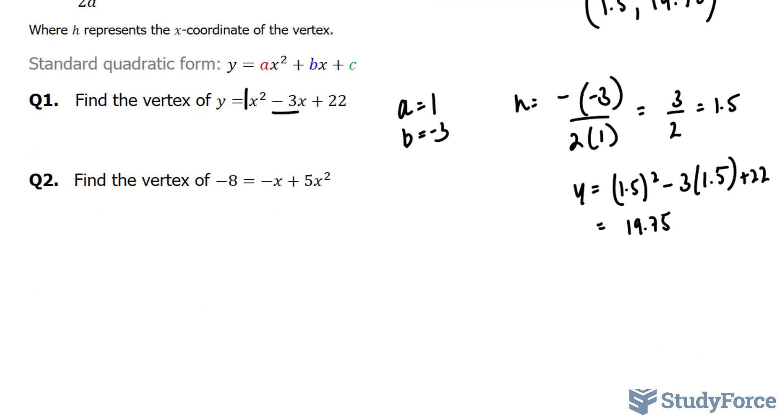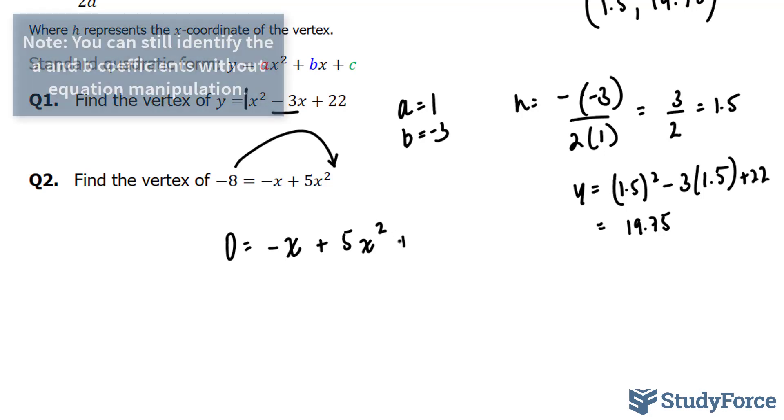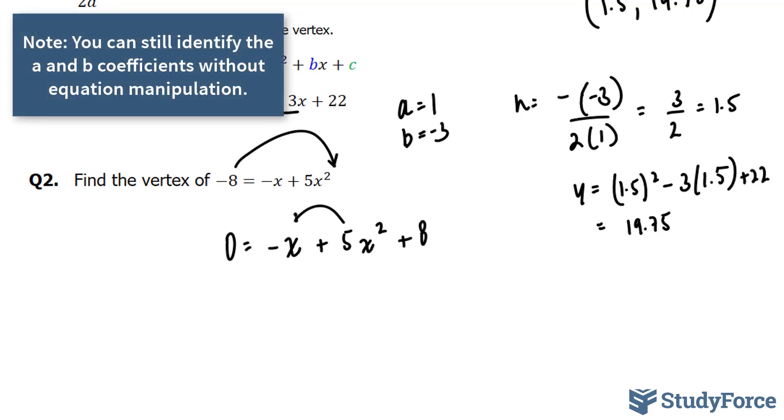Now that we know our technique, we can do this faster. But unfortunately, unlike question 1, this equation is not in standard form. You need to manipulate it so that it becomes in standard form first. And the way you do that is you bring this 8 to the other side, where you end up with 0 is equal to negative x plus 5x squared plus 8. Change the position of both of these so that the a and b are easy to identify.